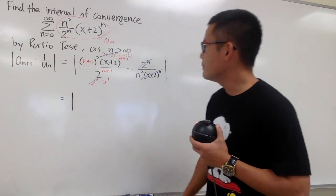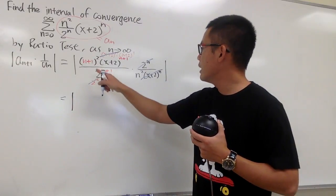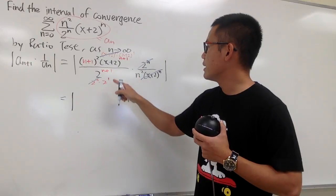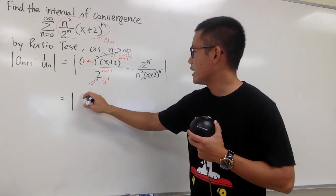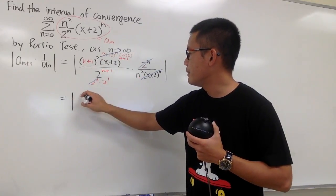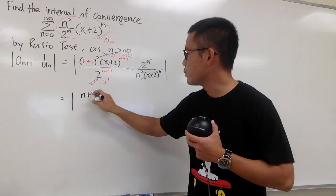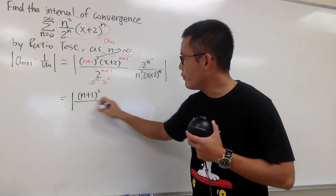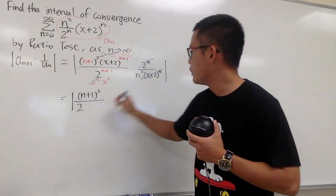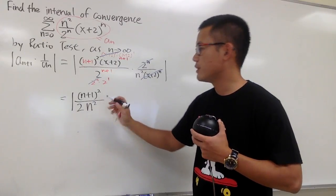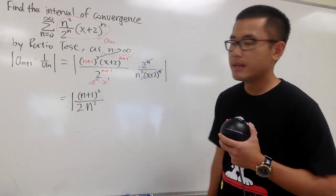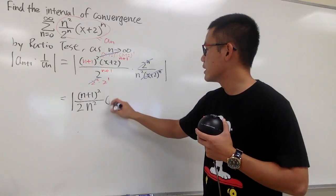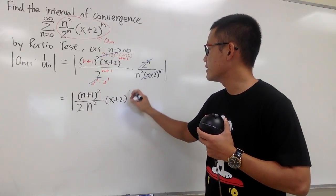Next we will have the absolute value, and the only thing that has n on the top now is (n+1)². So we have (n+1)² over — we have a 2 on the bottom and n² on the bottom — and we also have the (x+2) on the side.